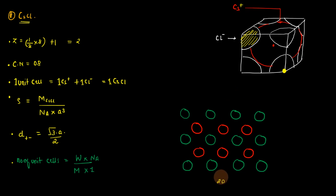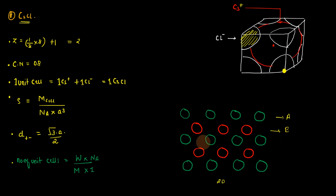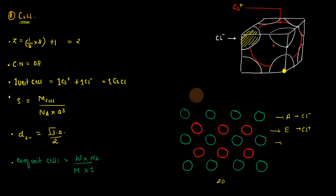In this 2D arrangement, the green color represents your chloride ions and red represents your cesium⁺ ions. From this 2D arrangement you can get an idea about the 3D arrangement. The green and red colors are arranged alternately. If I try to make a unit cell in this fashion, it looks as if the green color atoms are forming a unit cell — present at the corners — and the red color particle is trapped inside the square void.